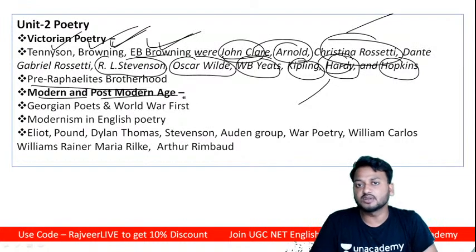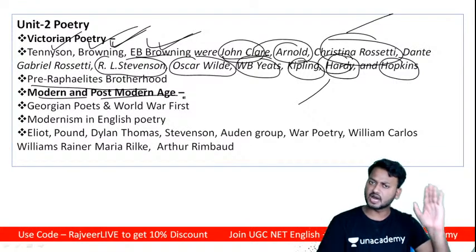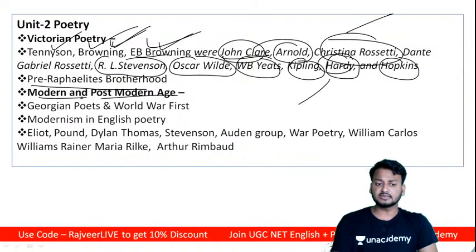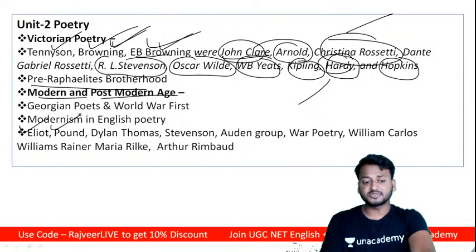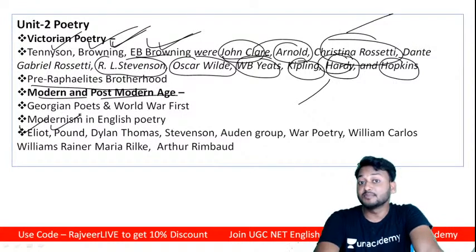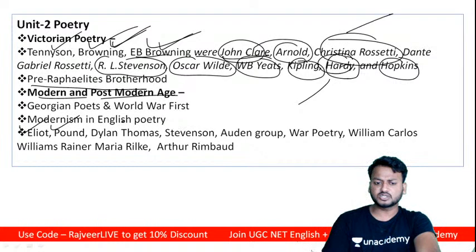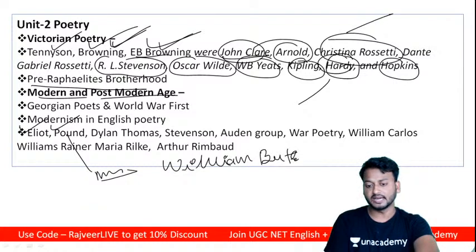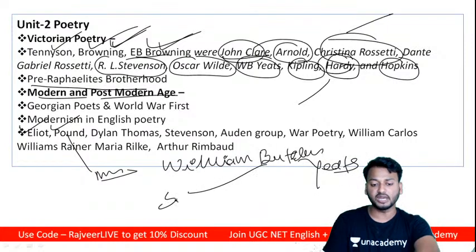In modern and post-modern poetry, the major figure is T.S. Eliot, who revived poetic plays in English. Ezra Pound is known for symbolism. William Butler Yeats is known for his symbolic poetry — symbolism is associated with Yeats.